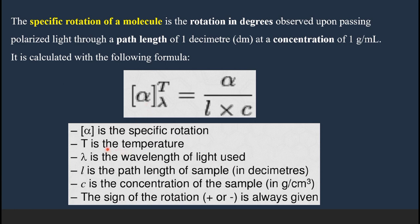Because specific rotation also changes with temperature, whenever you give the specific rotation you must mention the temperature. Normally we use 25 degrees centigrade (298 K). The wavelength of light lambda is also specified — very often you will find capital D, which represents the sodium D line with a wavelength of 589 nanometers. L is the length of the sample tube or path length, and c is the concentration.